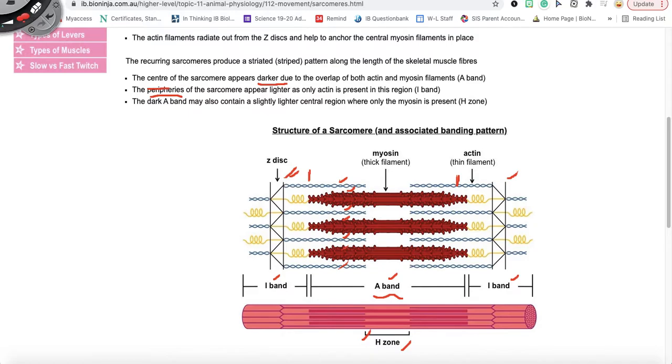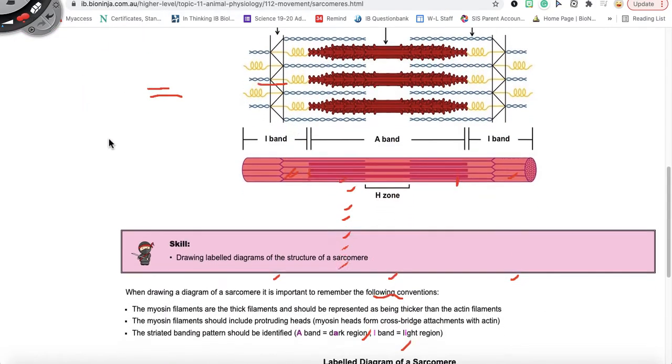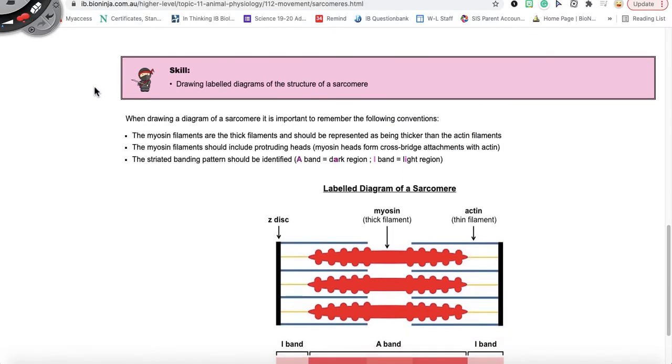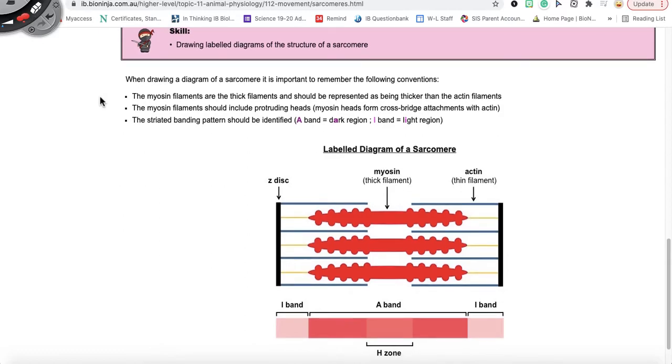So let's move further down. So you are asked to draw labeled diagrams of the structure of the sarcomere. So you would draw something like this. This is a labeled diagram.